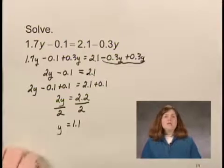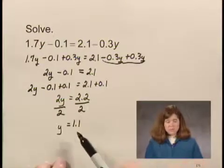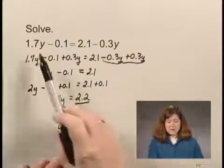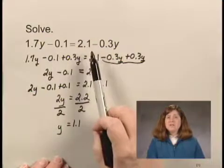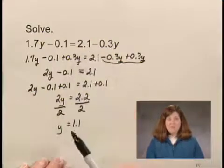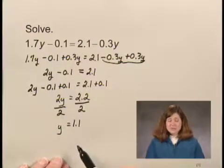In order to determine if this is the solution of the equation, we would substitute 1.1 into the original equation, evaluate both sides of the equation and see if they represent the same number. If we do that, we'd find that it does represent the same number. 1.1 then is the solution of the equation.